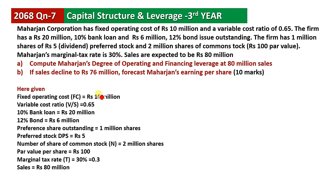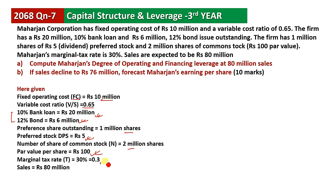Fixed operating cost is 10 million. Variable cost ratio is 0.65, meaning for each unit of sales, 0.65 is kept as variable cost. Loan is 20 million in bank loan. Bond amount is 6 million with interest rate of 10% for bank loan and 12% for bond. Common stock is equal to 2 million shares with value of $100,000. Tax is 30% and sales are equal to $80,000,000.